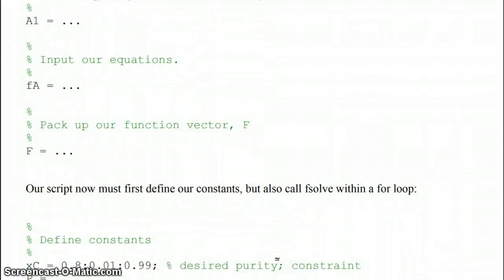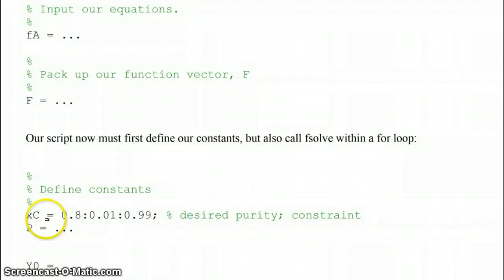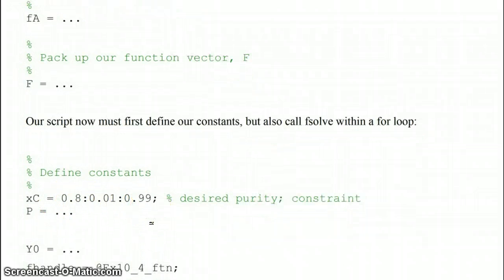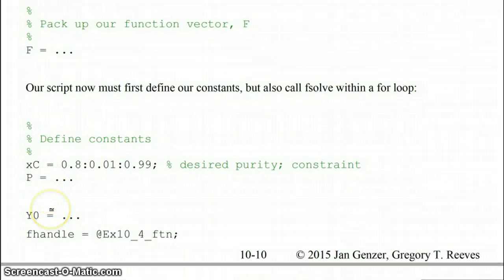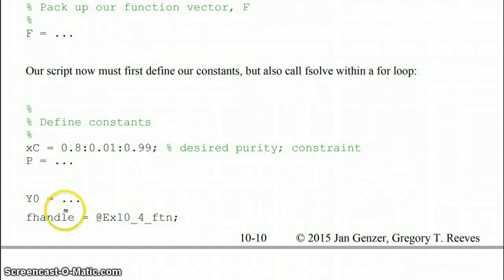First we're defining our constants in our script, where our purity is this vector, which is defined using colon notation, from 0.8 to 0.99. Also we will define our system pressure and so on. In the script, we will again define our initial guess value and our function handle.